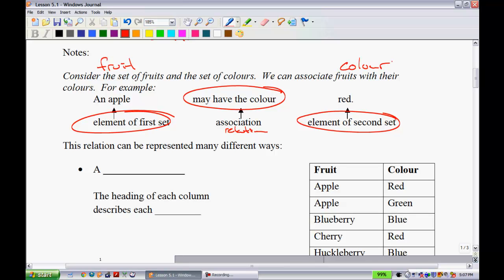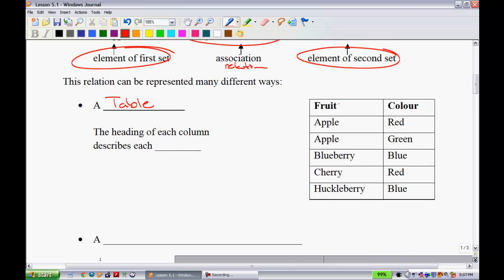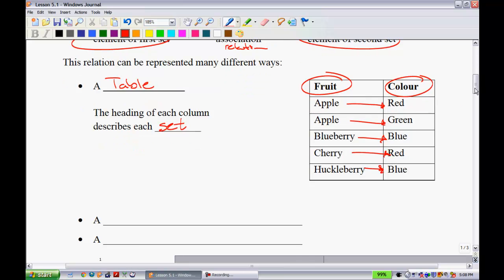We're going to talk about how we can represent a relationship like so. This relationship can be represented in different ways. The first way we could have it, we could have a table. The table I have, I have a number of different fruits, and we have the different colors. The heading of each column describes the set. We have fruit being one set, and color being the other. Basically, apple is red, apple can be green, like so. I know it's fairly straightforward.